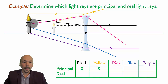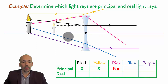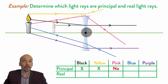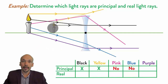The pink one starts here. It doesn't go parallel to the principal axis here or here. So it's not a principal ray. The same for the blue one — it doesn't go parallel to the principal axis, and it does not go through the optical center. So it's not a principal ray. And finally the purple one goes here parallel, but if you draw this one back, it does not hit the image. So it's not a principal ray.